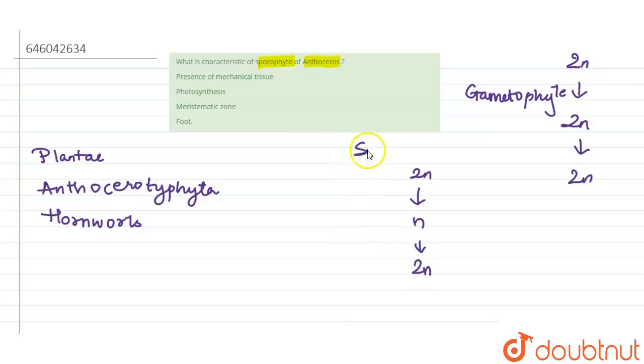All right, now when we are talking about the characteristic of sporophyte of anthoceros, that means what is prevailing in almost all the generations. So if we see presence of mechanical tissues, no, this is not proper. Then photosynthesis, no, even though that is not a characteristic. Yes there are some who can follow photosynthesis, but this cannot be counted as a characteristic feature. Then when we say about meristematic zone.